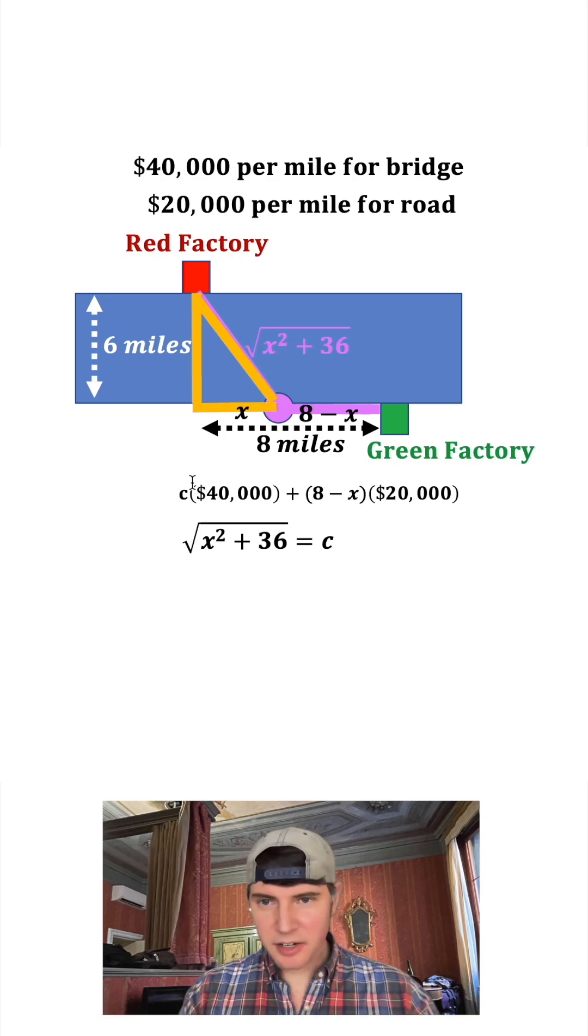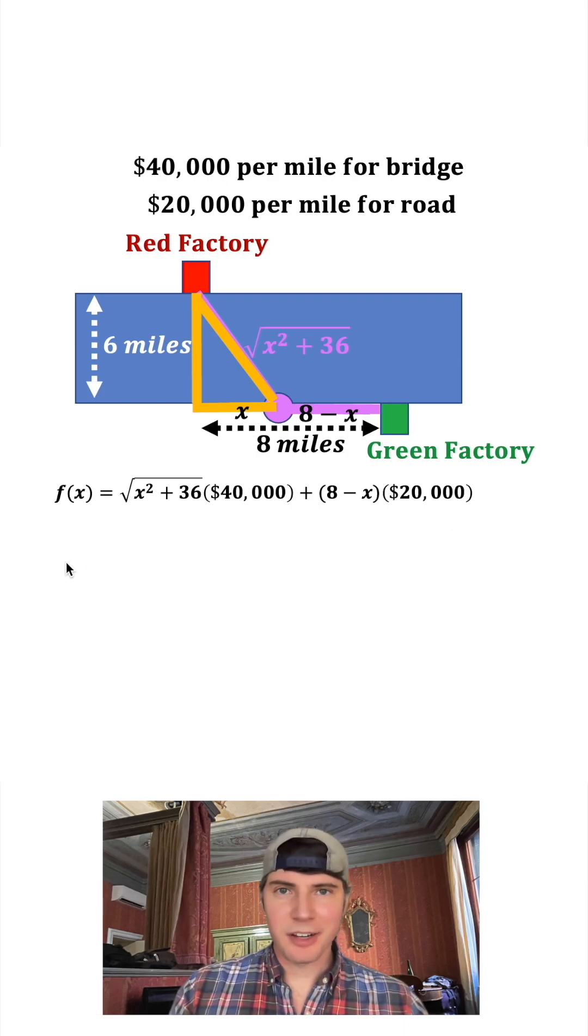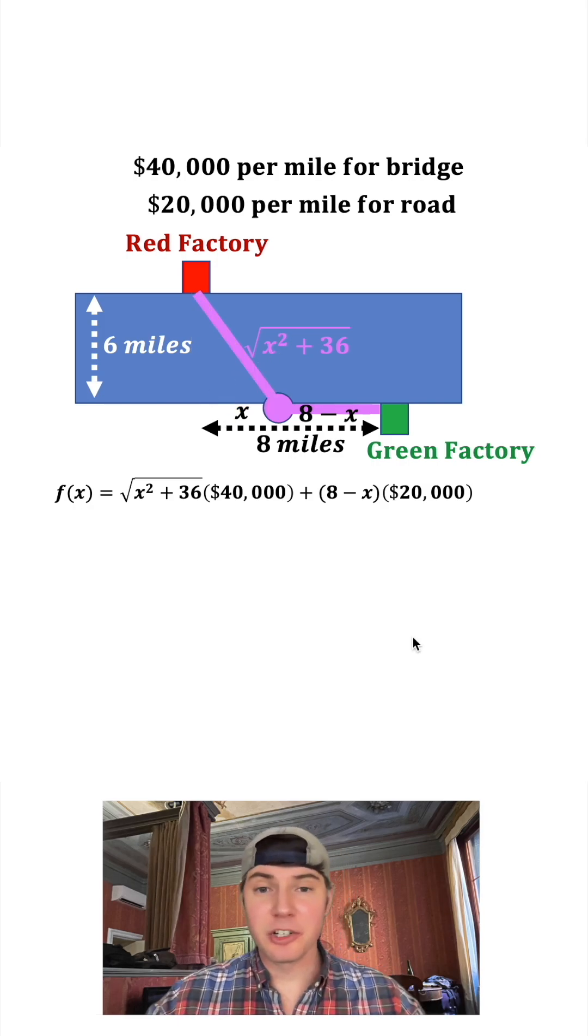This is our total cost once we know what x is. Let's make it a function in terms of x: f(x) = √(x² + 36) × $40,000 + (8 - x) × $20,000. There's two ways to solve this.